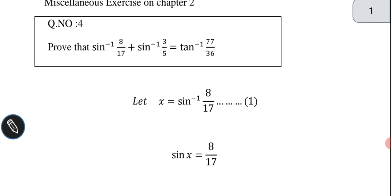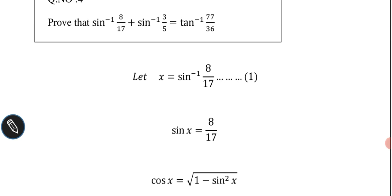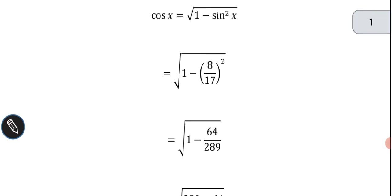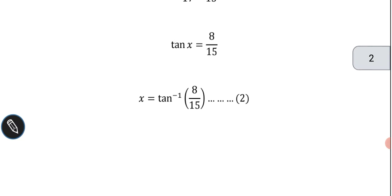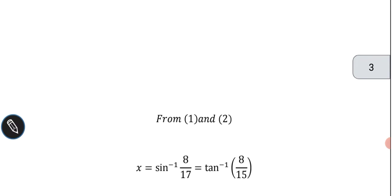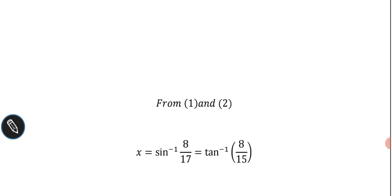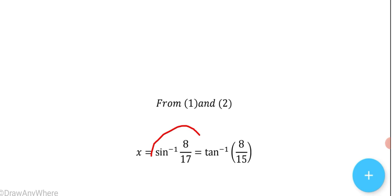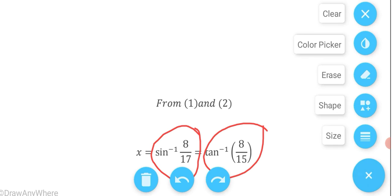In equation 1, the value of x is sin⁻¹(8/17), and in equation 2, x = tan⁻¹(8/15). So by using equations 1 and 2 we can write: sin⁻¹(8/17) = tan⁻¹(8/15), which means the value of sin⁻¹(8/17) equals the value of tan⁻¹(8/15).